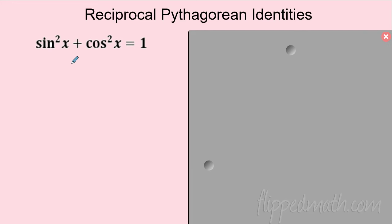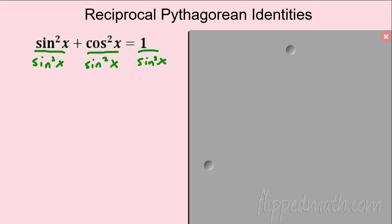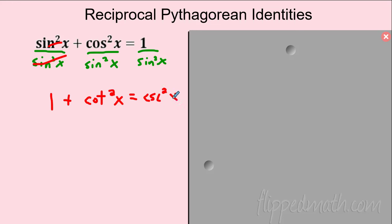Now let's build the reciprocal trig identities. Starting from cosine² + sine² = 1, divide everything by sine squared. Sine squared over sine squared is one, cosine over sine is cotangent, and one over sine is cosecant. So we get: cotangent² + 1 = cosecant².